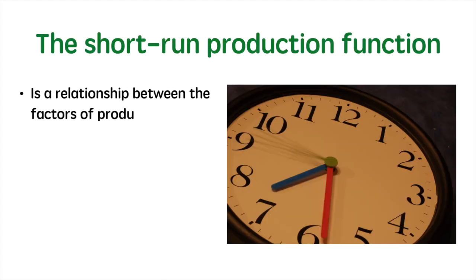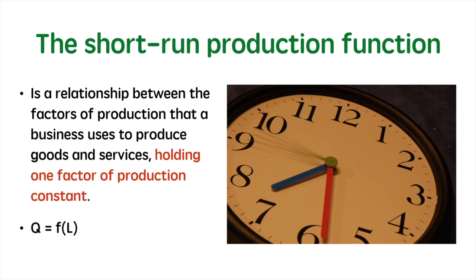The short run production function is a relationship between the factors of production that a business uses to produce goods and services, holding one factor of production constant, typically capital. The short run production function states that output is a function of labour.